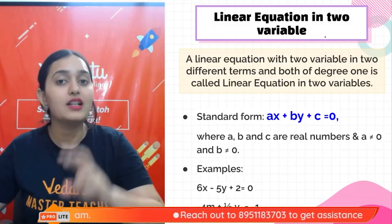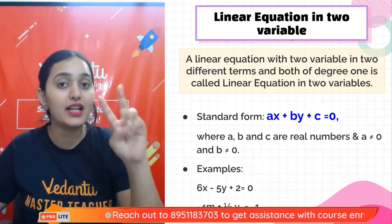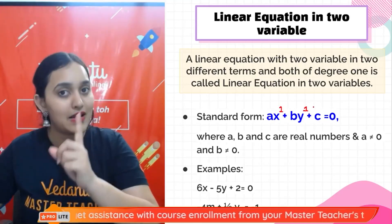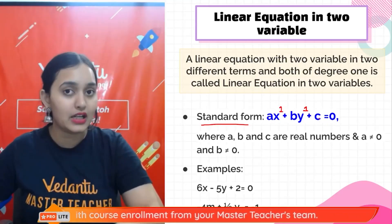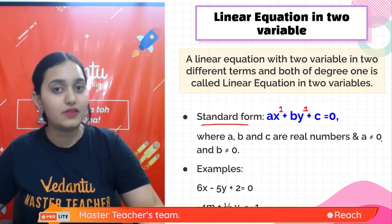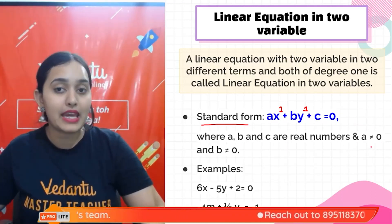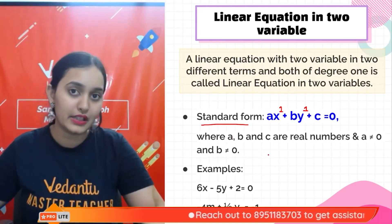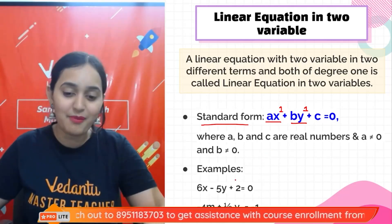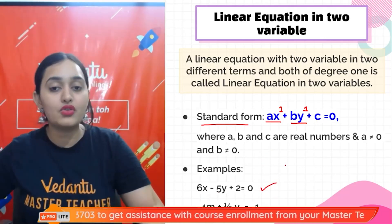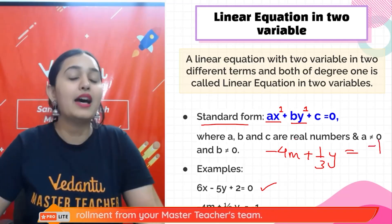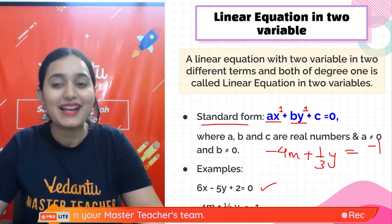A linear equation in two variables has two variables each with power one — x to the power one, y to the power one. The standard form is ax + by + c = 0, where a ≠ 0 and b ≠ 0. For example, 6x − 5y + 2 = 0, or −4m + (1/3)y = −1 are linear equations in two variables.